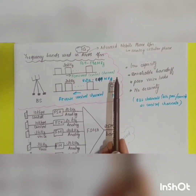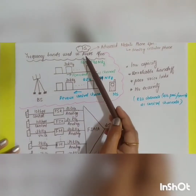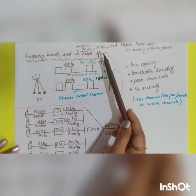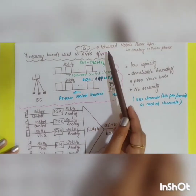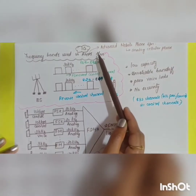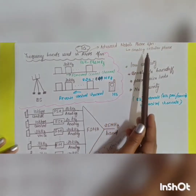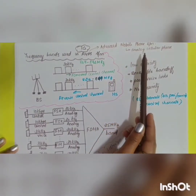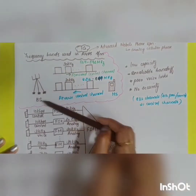In today's video we will see the different examples of 1G, 2G, 3G, and 4G wireless communication systems. The example of 1G is the AMPS system — AMPS stands for Advanced Mobile Phone System.